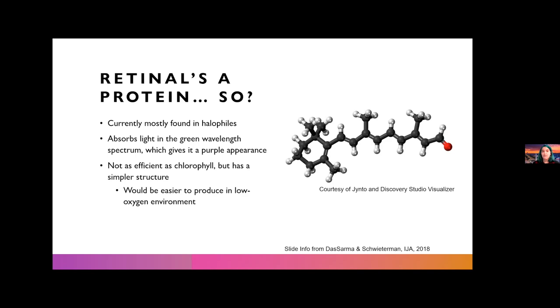However, retinal does have a simpler structure which would make it more likely to spontaneously occur and would make it easier to produce in a low oxygen environment because it takes less energy. The thing about the purple Earth hypothesis is that it accounts for photosynthesis, but it doesn't cover all the corners of carbon fixation. So we're not entirely sure how early life fixed carbon and did so many things that are so vital for life, which is partially what I am trying to answer in my project.